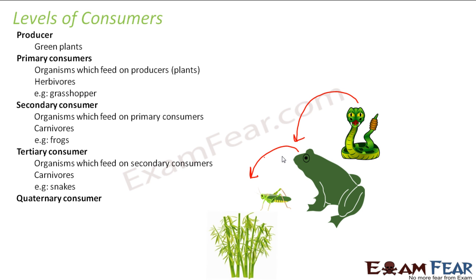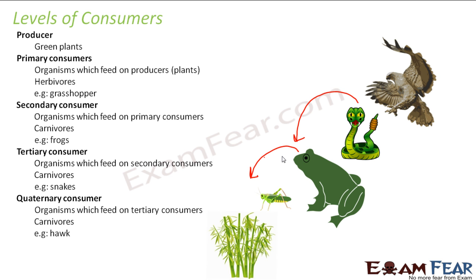We can even have a quaternary consumer — something feeding upon the tertiary consumer. That organism is also going to be a carnivore. For example, the bird called hawk. It's a very big bird and generally feeds on other animals. So the frog, snake, and hawk are all carnivores, but since they feed on different animals their levels are different. If the hawk had been feeding on a herbivore, it would have been a secondary consumer. So as the level increases, it goes from primary to secondary, tertiary, and then quaternary consumer.